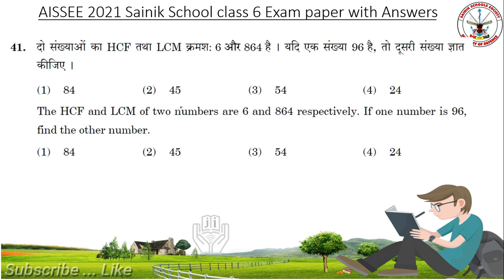The HCF and LCM of two numbers are 6 and 864 respectively. If one number is 96, find the other number. Answer is 54.